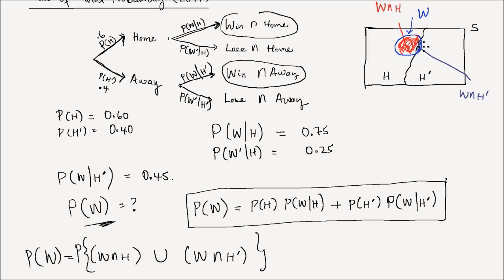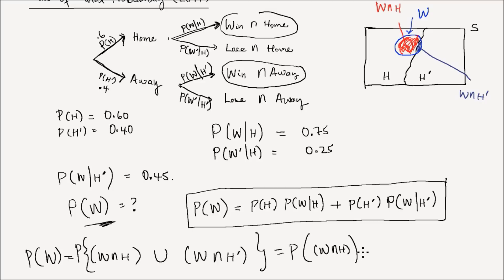What you realize here is that the event shaded in blue and the event in red are actually disjoint — they are mutually exclusive. So when you have two mutually exclusive events and you want to calculate the probability of the union, you can get that by adding the probabilities. So the probability of winning equals the probability of W intersection H, plus the probability of W intersection H complement.